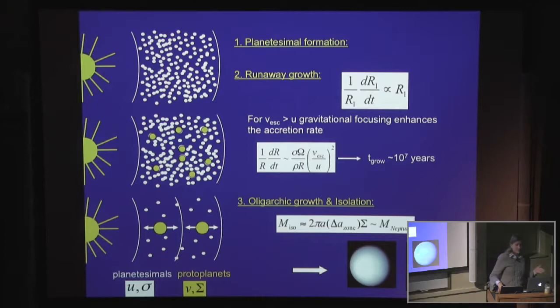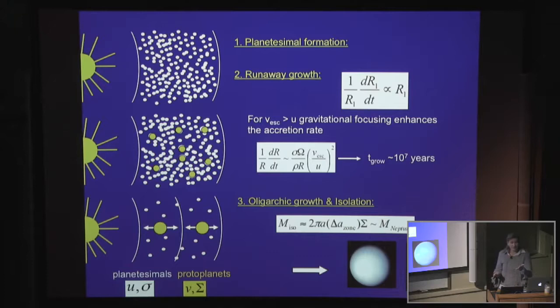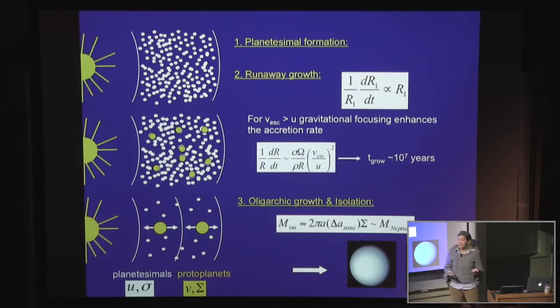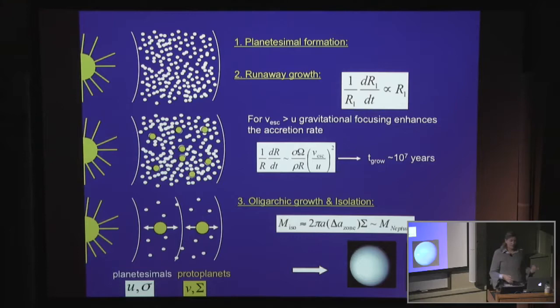However, there is a problem. If you repeat this calculation in the inner solar system, say at 1 AU, you find that the isolation mass is only a fraction of the mass of the Earth — about a twentieth. So the Earth cannot have just been a simple isolation mass. Although the outer planets like Uranus and Neptune may indeed be isolation masses, the planets in the terrestrial planet region are likely not. Instead, what we think happened is they had an additional phase of planet formation that we now call giant impacts.